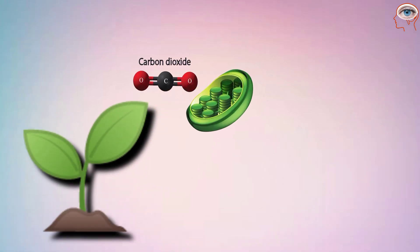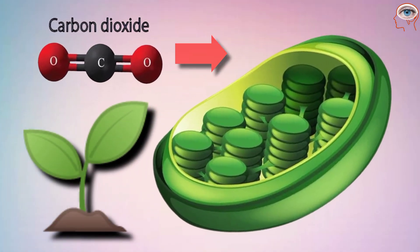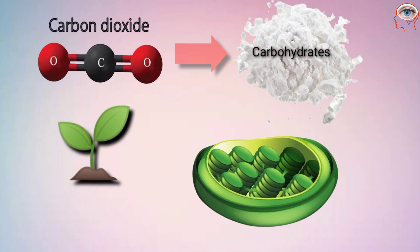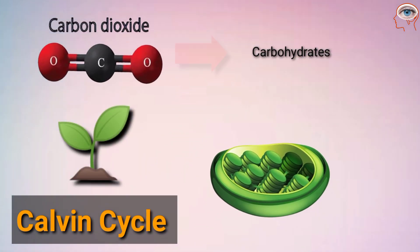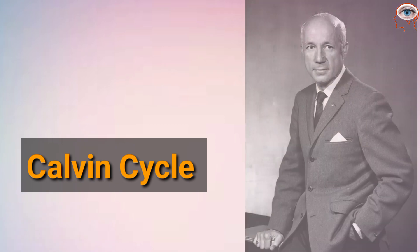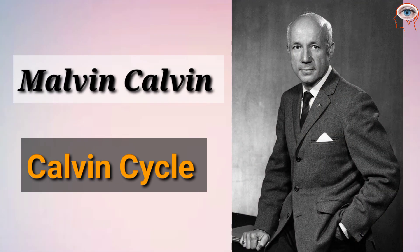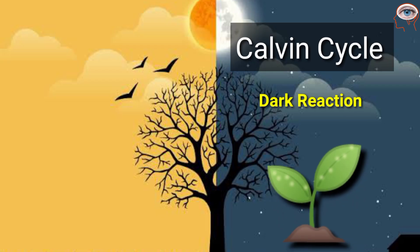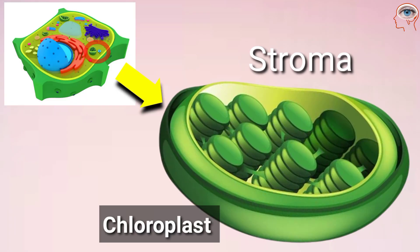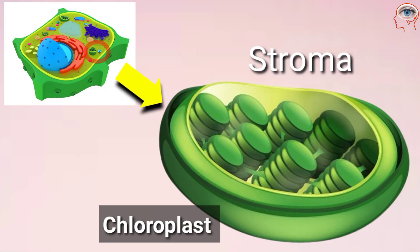The conversion of carbon dioxide to carbohydrates is called the Calvin cycle, and it is named after Melvin Calvin who discovered it. They are also called the dark reactions because light is not directly involved. They take place in the stroma of the chloroplast.